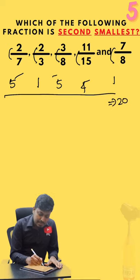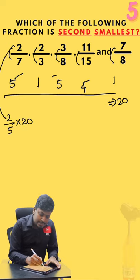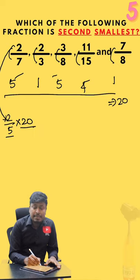Now multiply with each fraction. 2 divided by 5 into 20. Got it? The numerator 2 as it is, the denominator will be the difference and the LCM number.